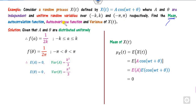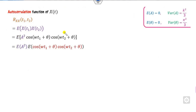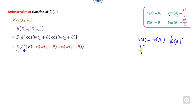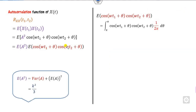Now, how do you find the autocorrelation? The autocorrelation R_x(t1, t2) is computed by substituting x(t1) and x(t2). Since A and θ are independent, you can separate E[A²] and the trigonometric expectation. To find E[A²]: using variance of A, E[A²] = k²/3. For the trigonometric part, you integrate cos(wt1+θ)·cos(wt2+θ) multiplied by the PDF of θ, which is 1/(2π), over −π to π.